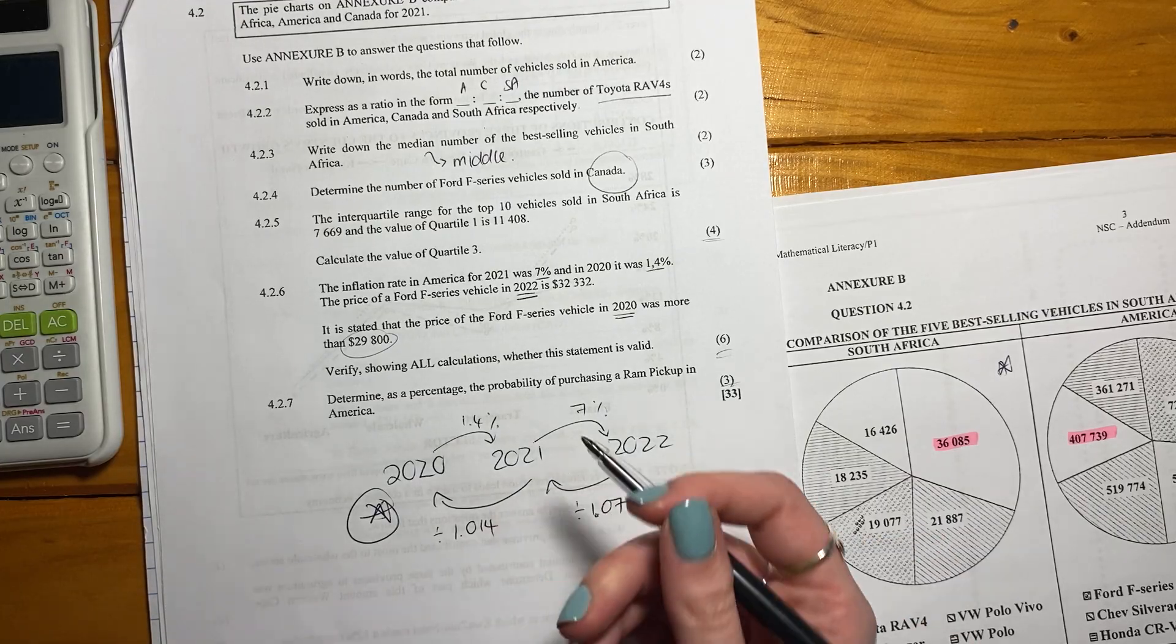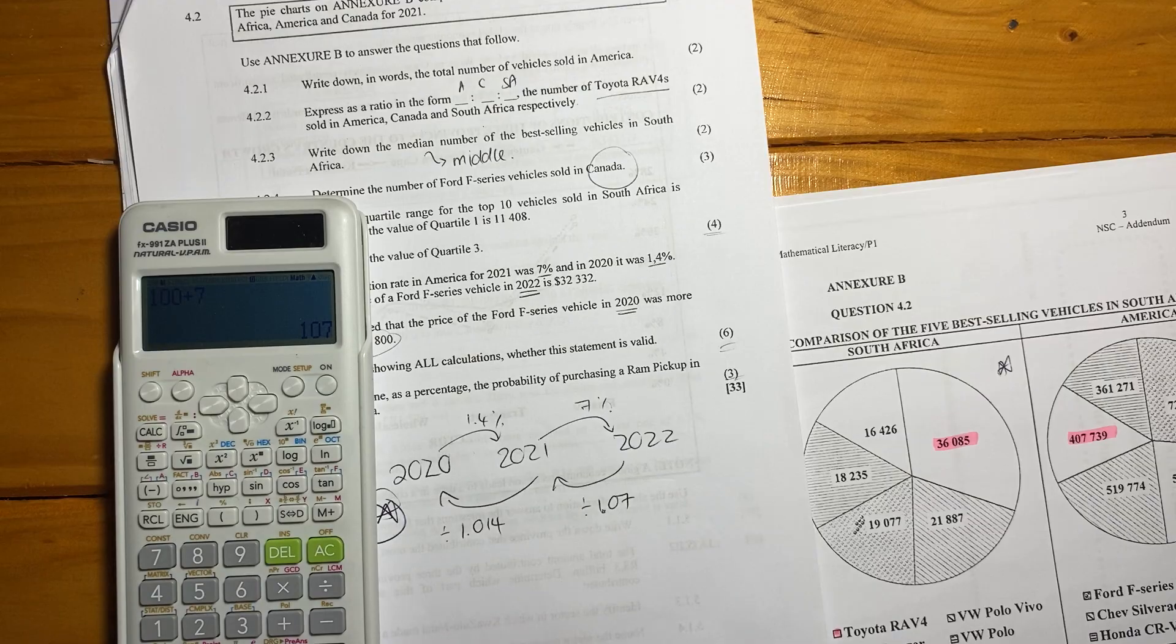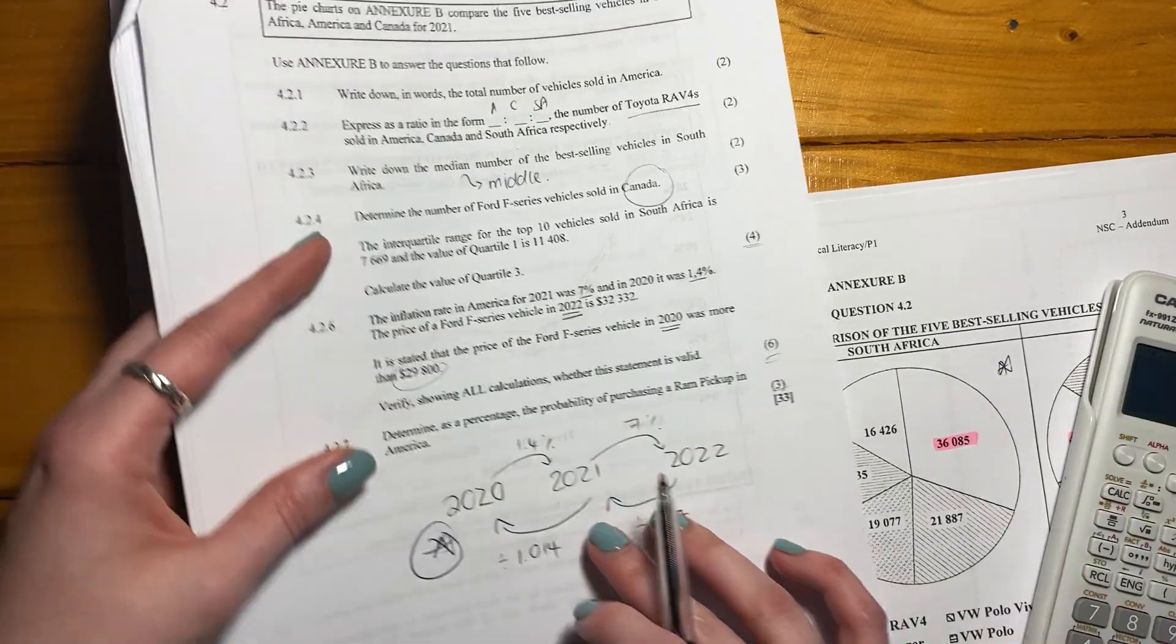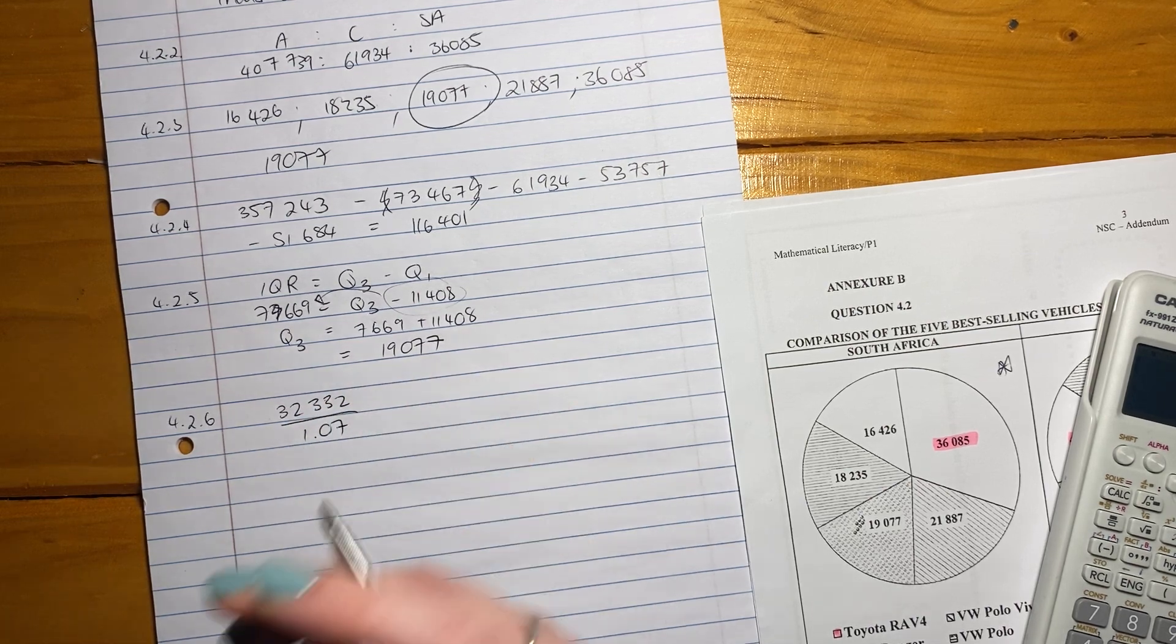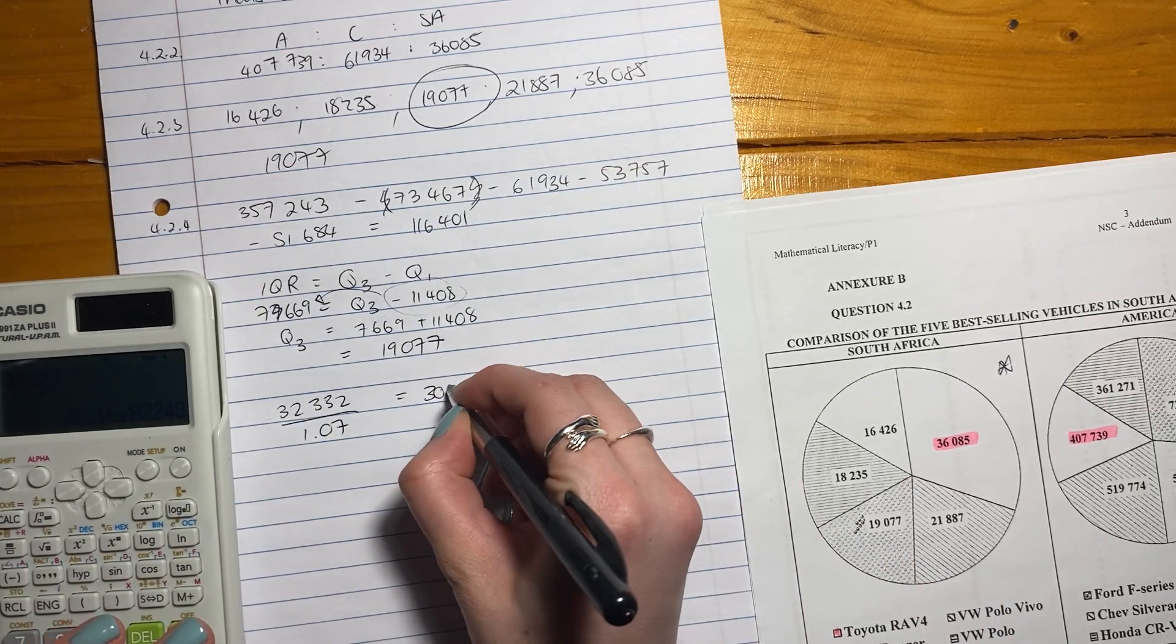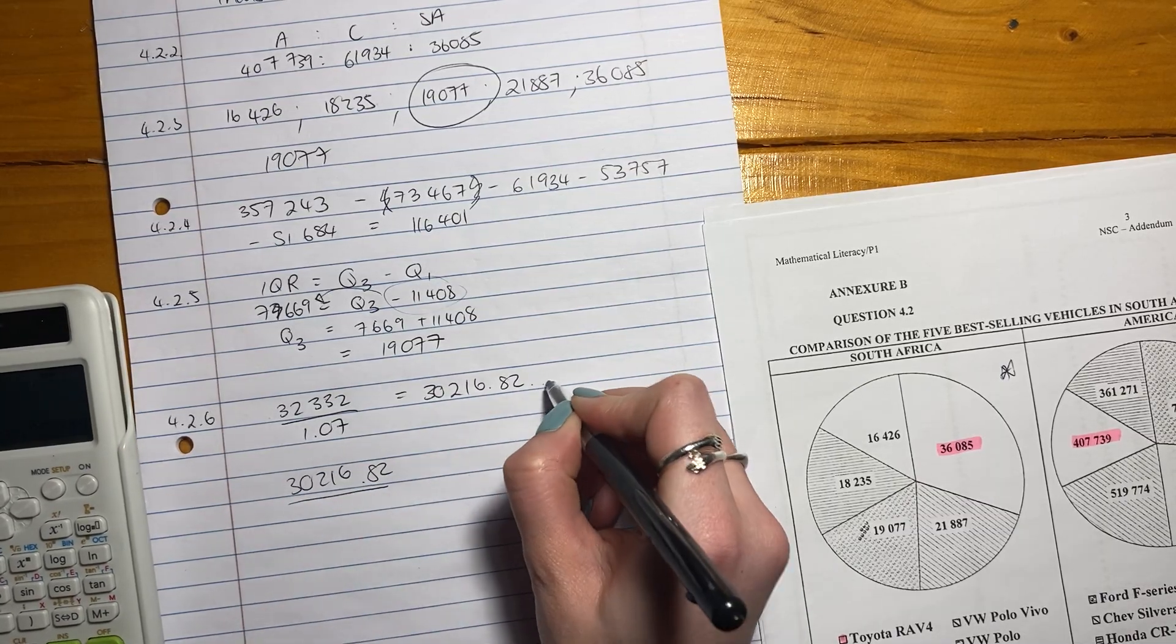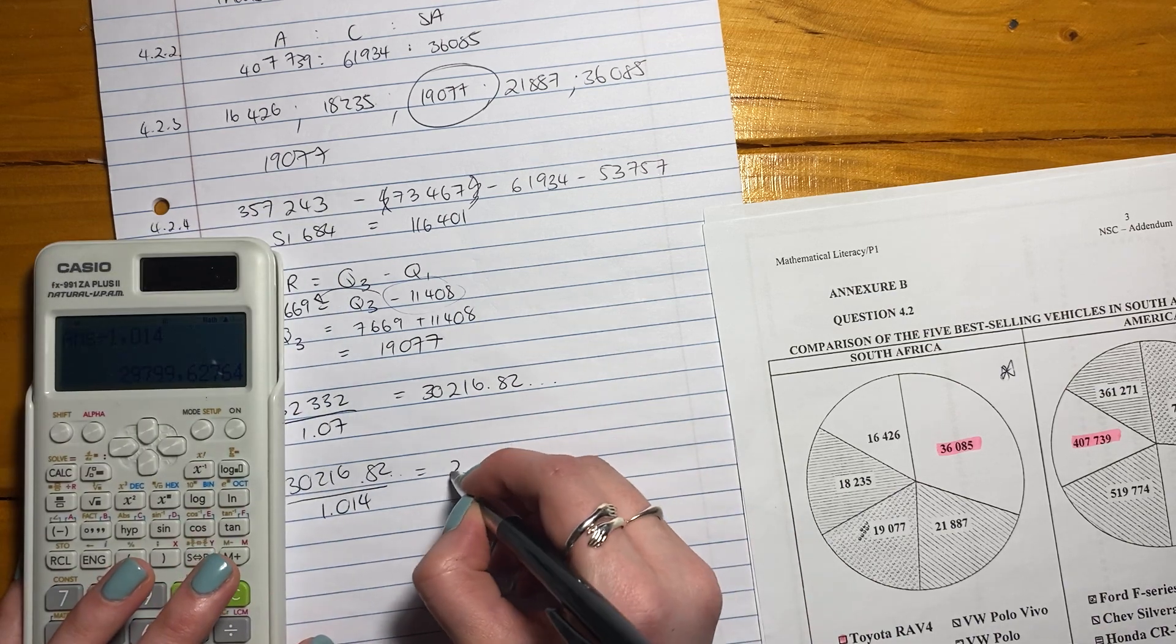What I did is I added 100 to this. So for example, 7%. So I said 100 plus 7, and I got 107. I said, okay, I want to make it a decimal, because that's how I want to work. I divide it by 100, I make it a decimal. I did exactly the same with 1.4%. So let's start by writing this out. We're going to strip it out like this. We're going to say the cost of the car in 2022, and I'm going to divide out the inflation for 2021. 32,332 over 1.07. So that is my answer. You can round it off here. But I don't want you to round it off in your calculator yet, because remember, we only round off at the end.